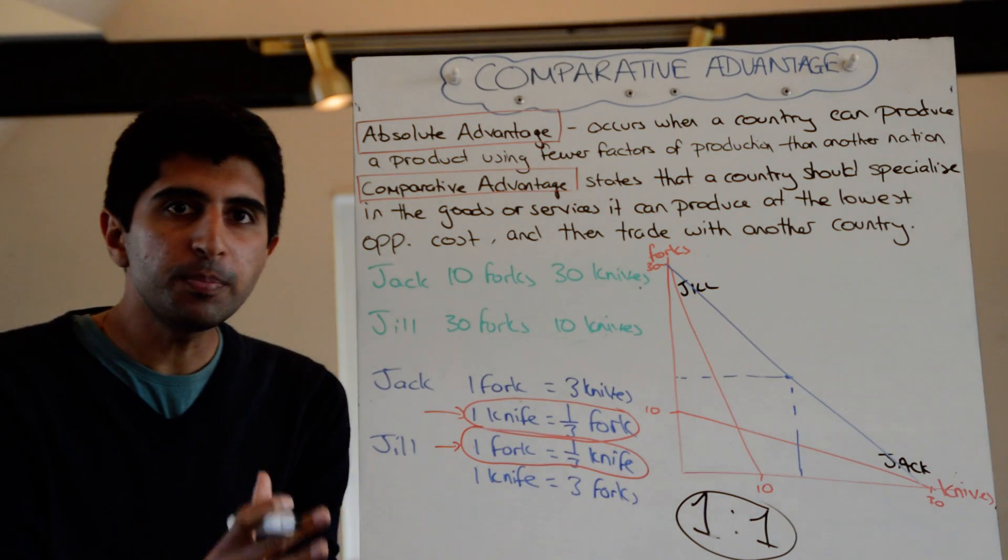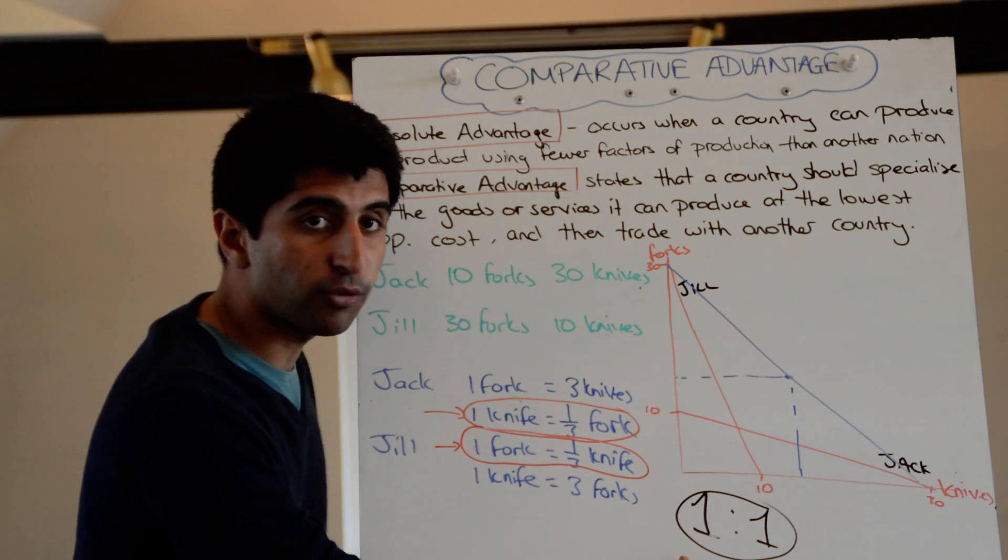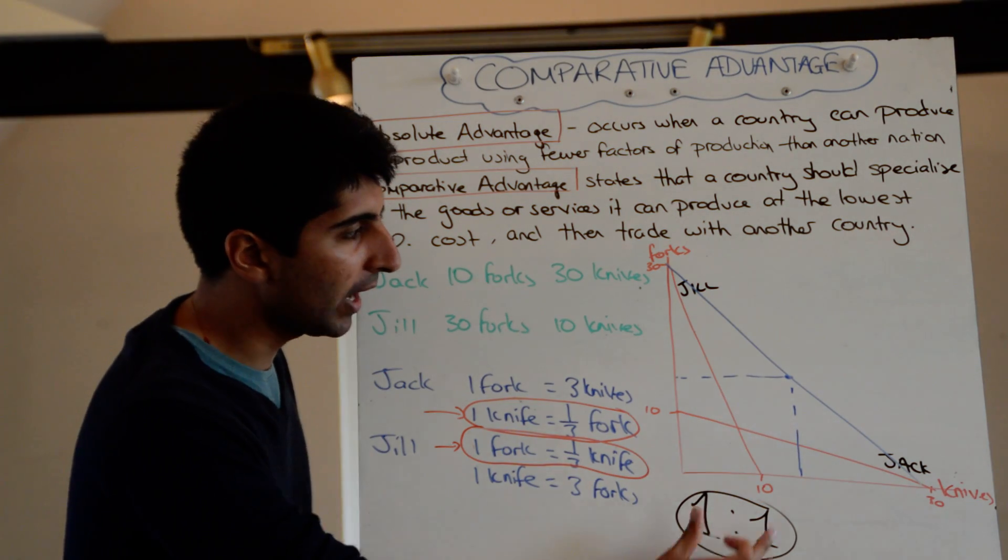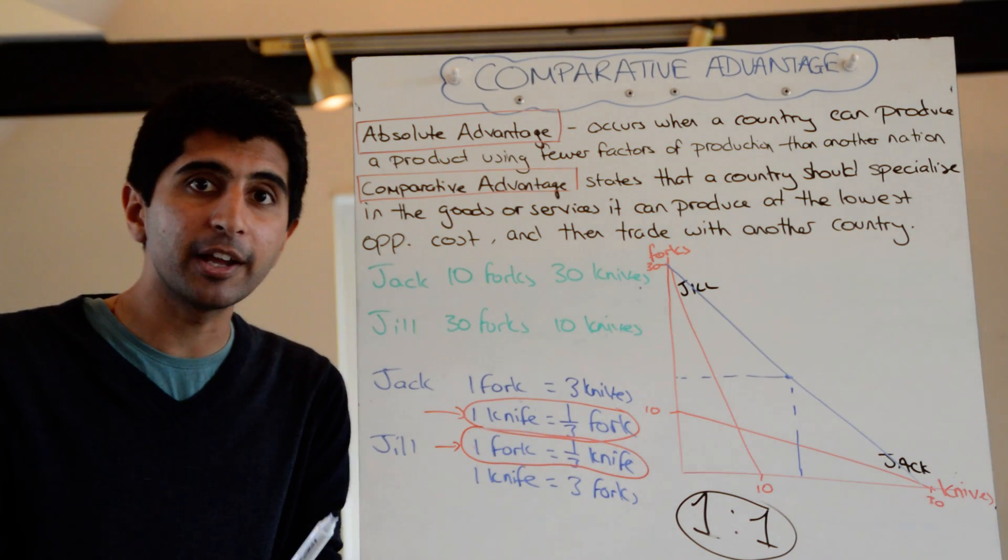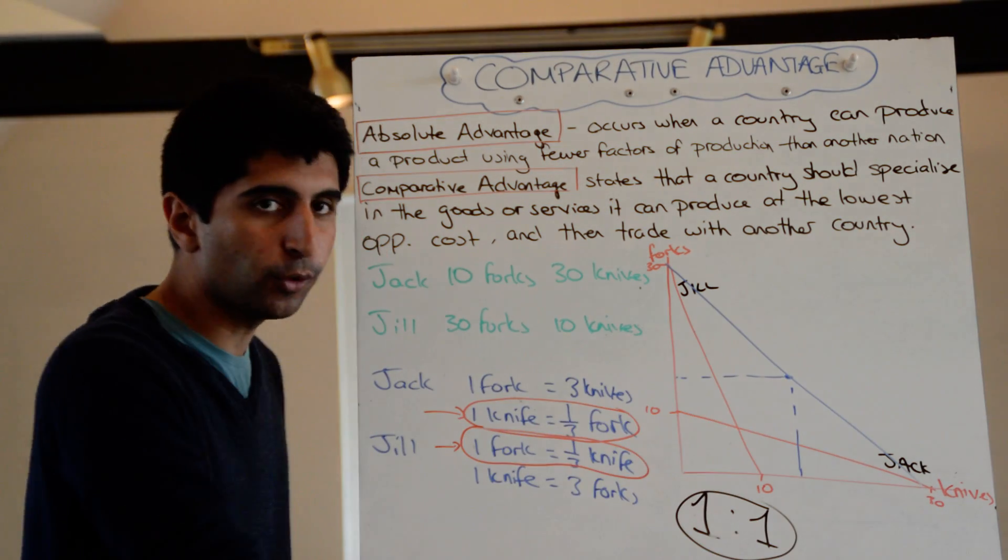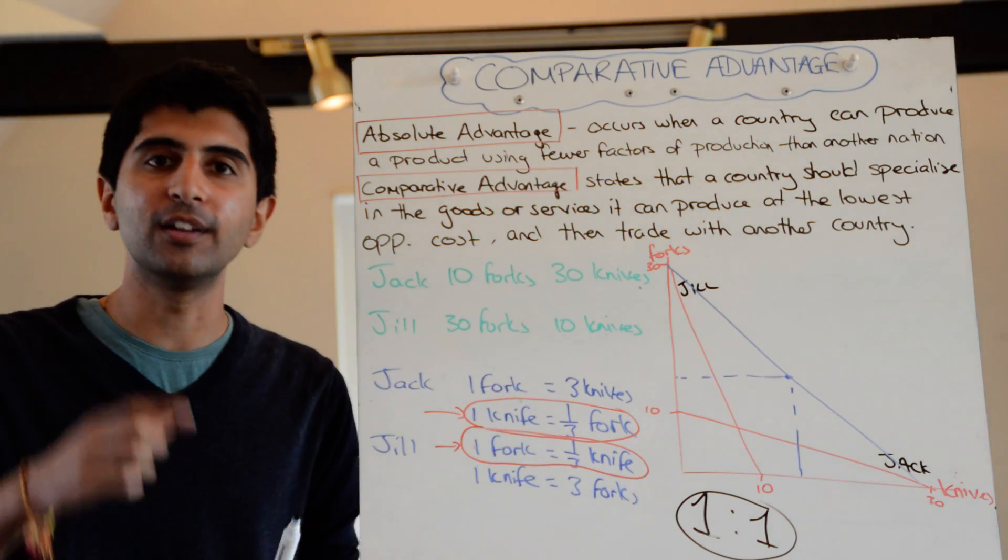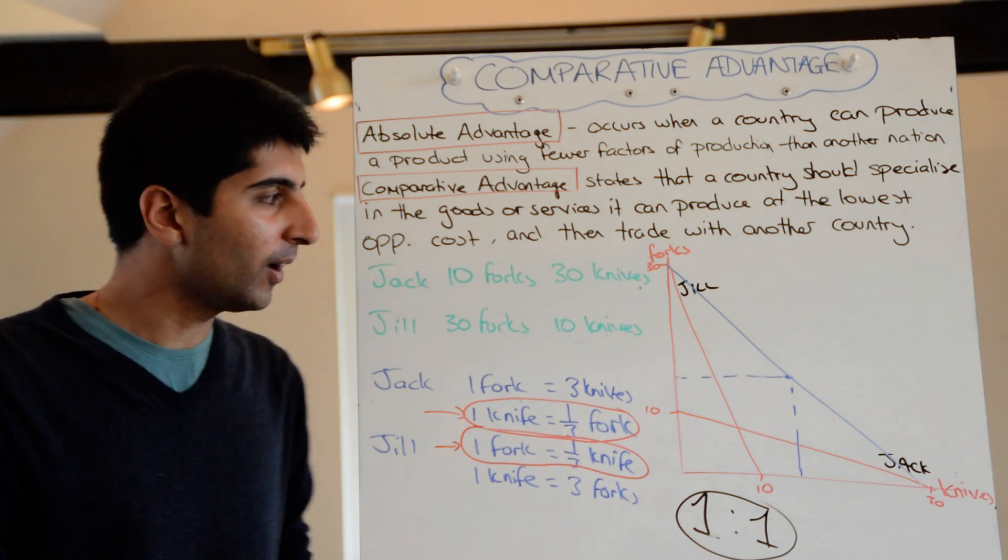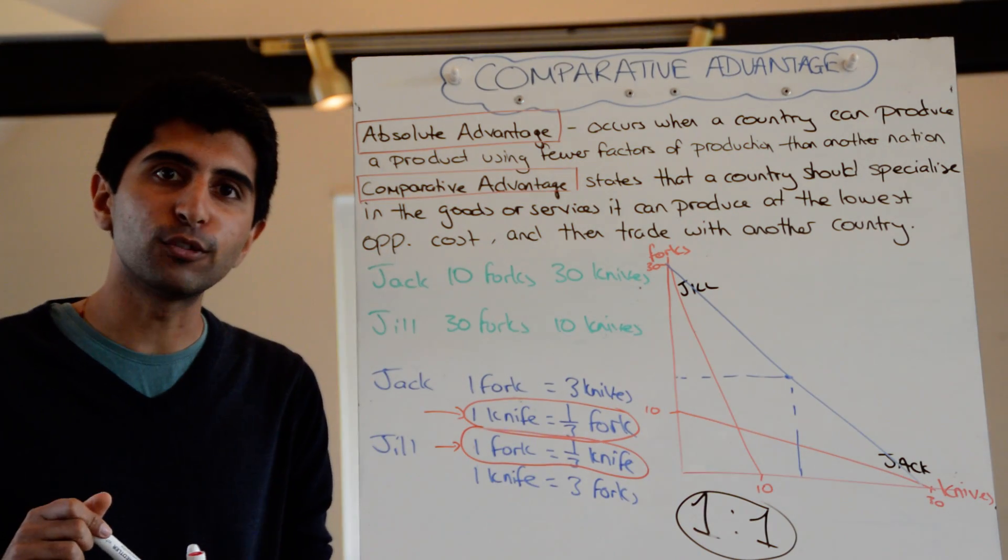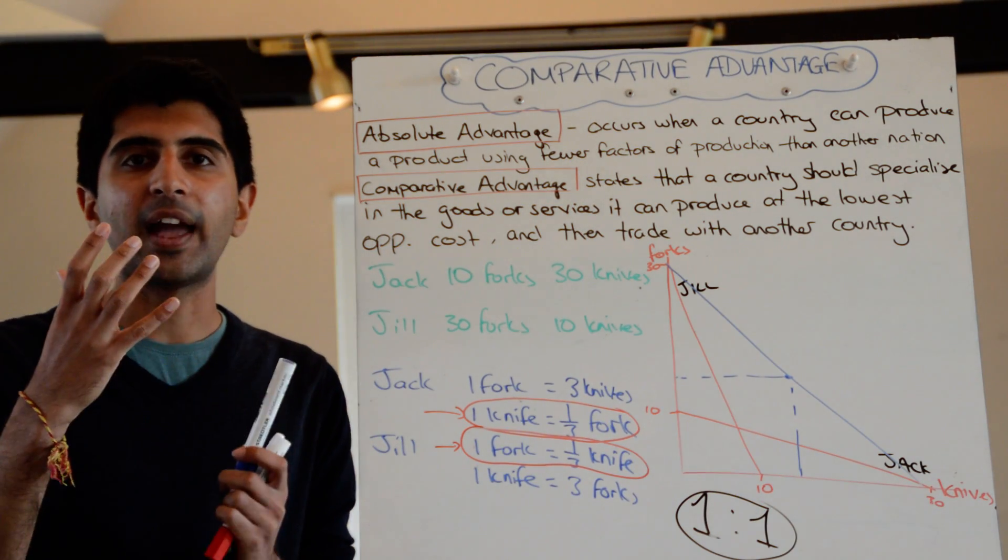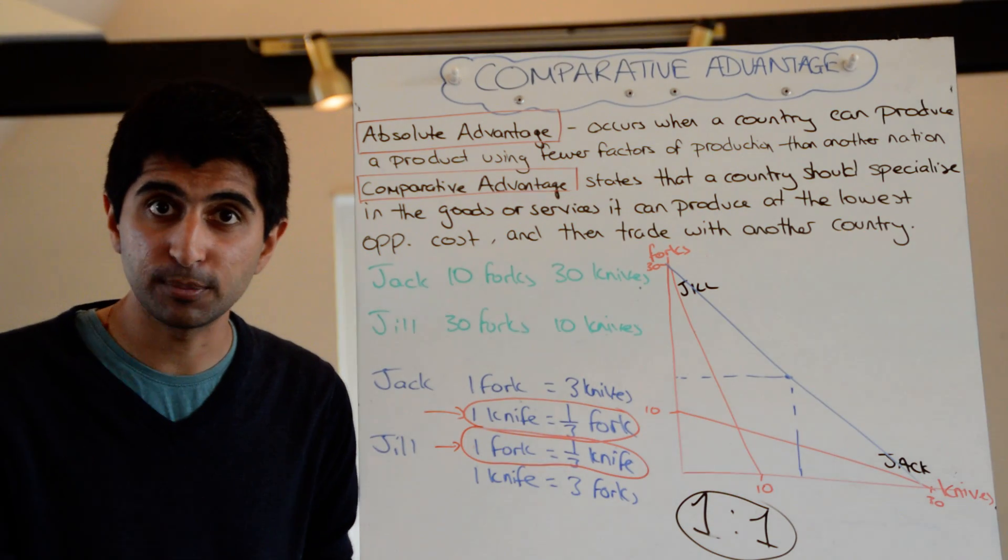So a new PPC curve is derived based on this rate of exchange here. And this point of fifteen forks being consumed by Jack and by Jill, and fifteen knives also being consumed by Jack and by Jill, is now attainable. Both Jack and Jill can consume beyond their expected PPCs at this rate of exchange, given that the comparative advantage is being exploited.